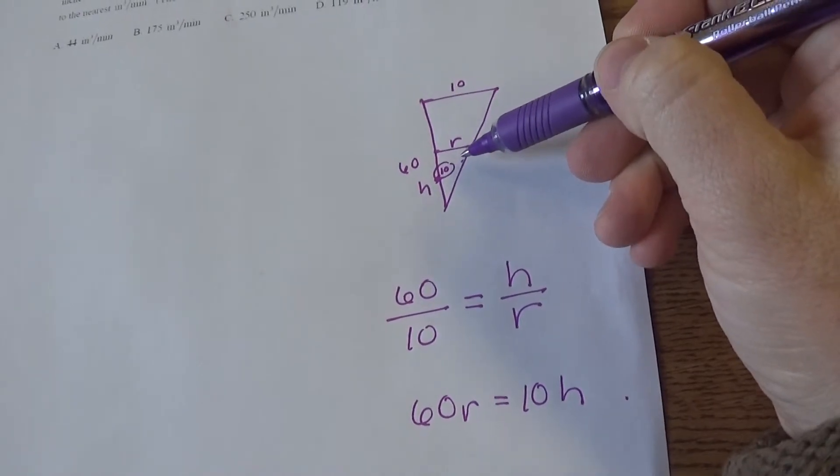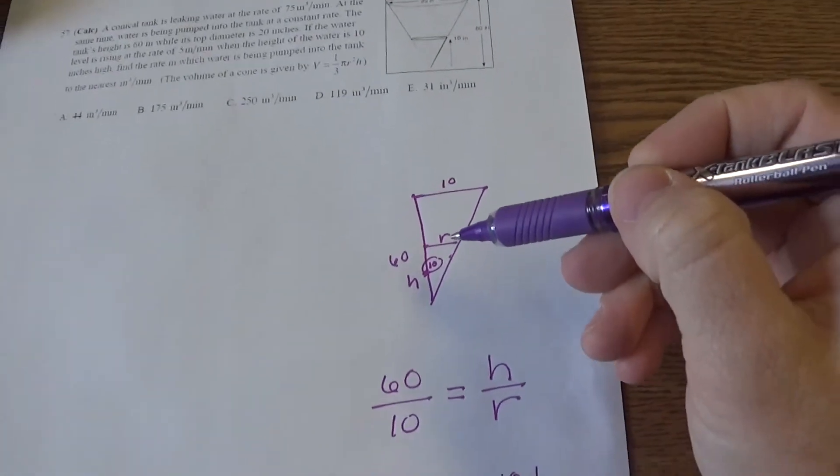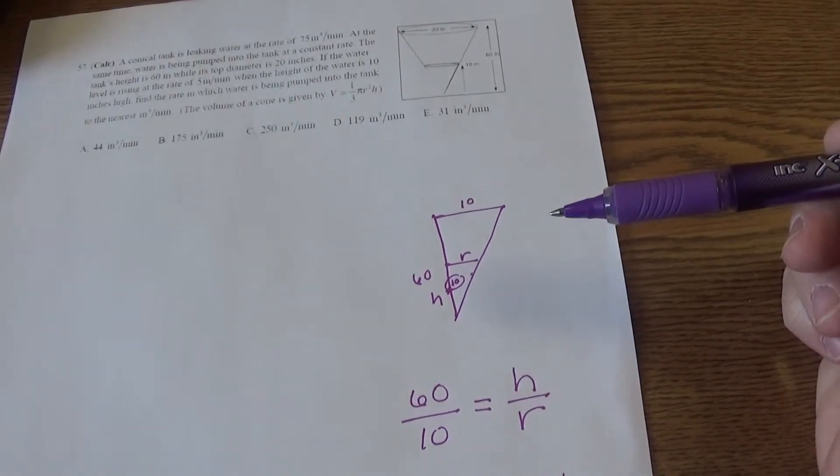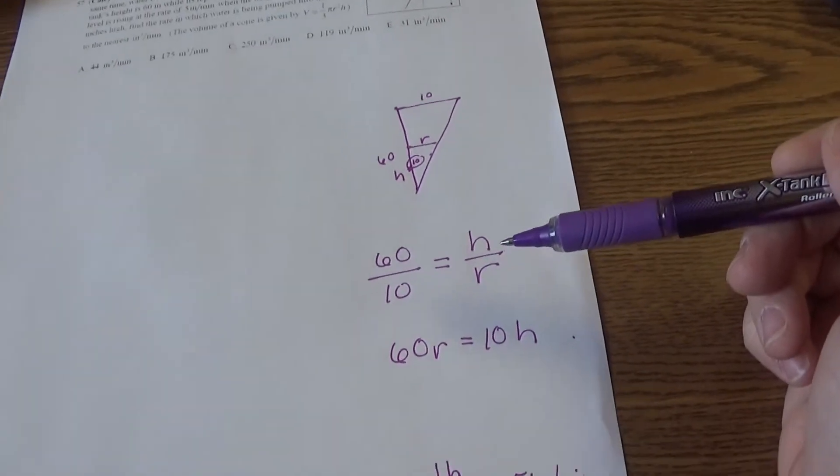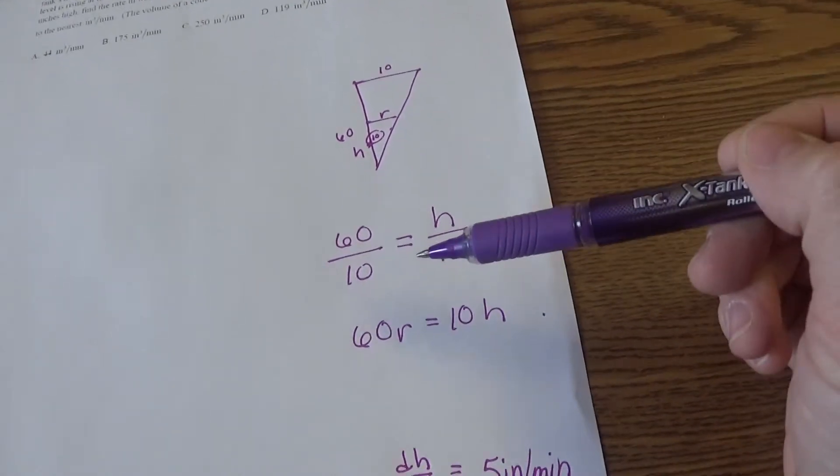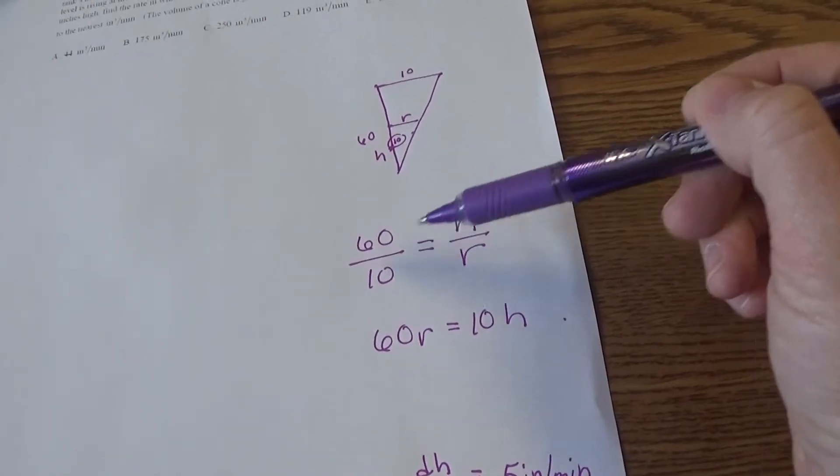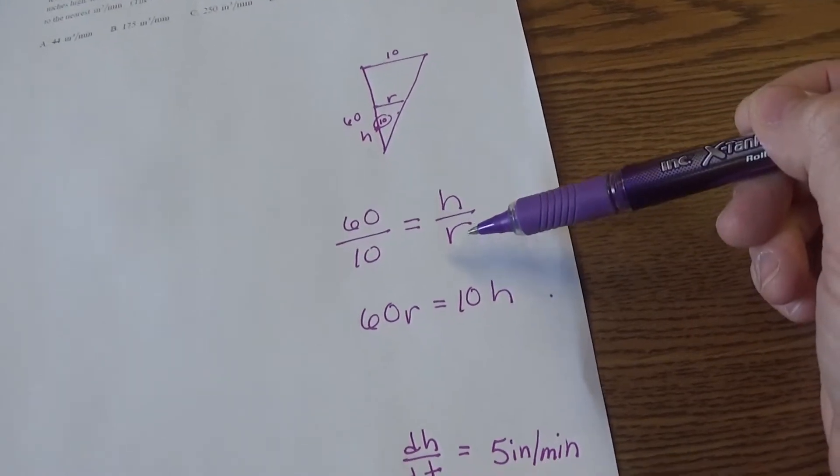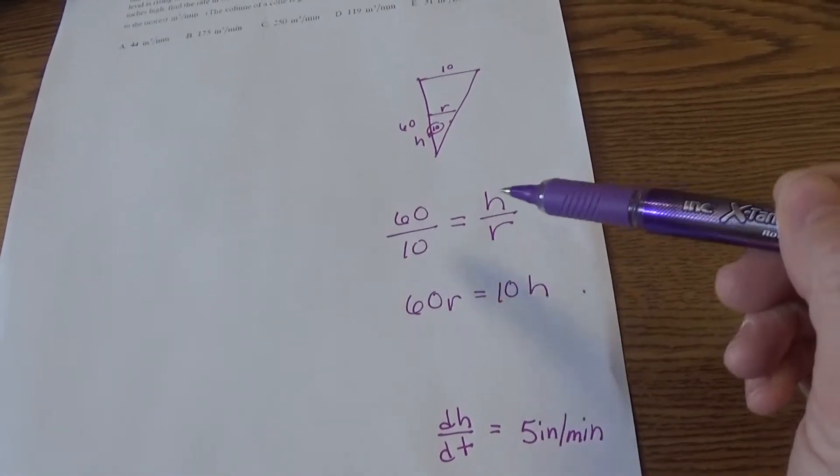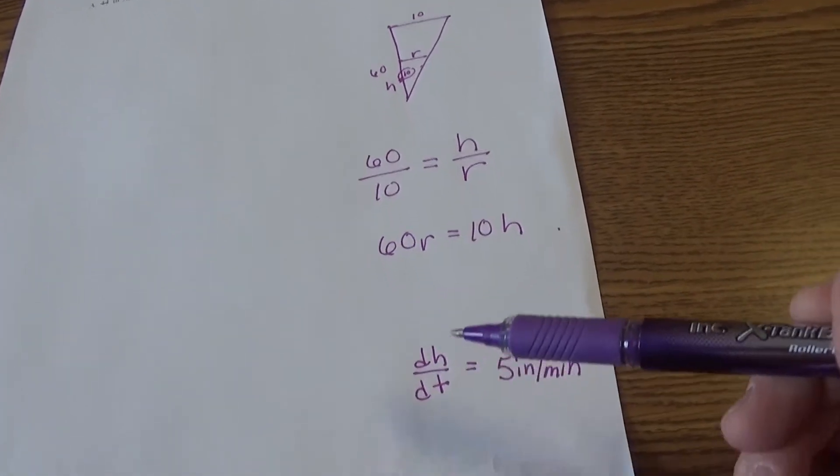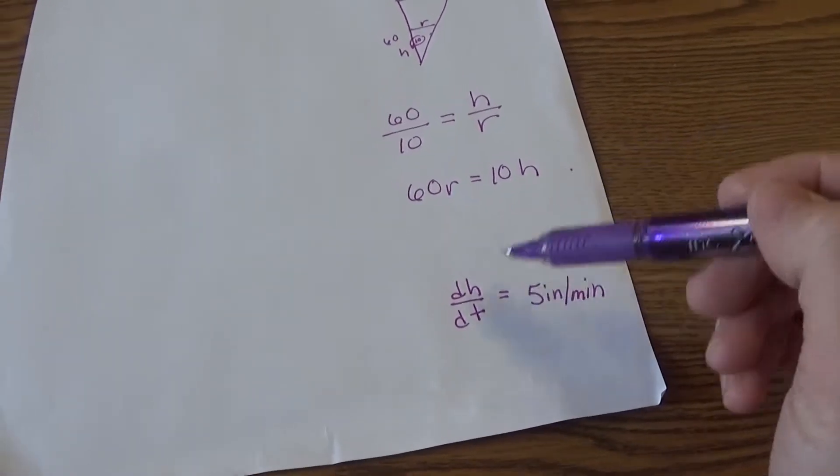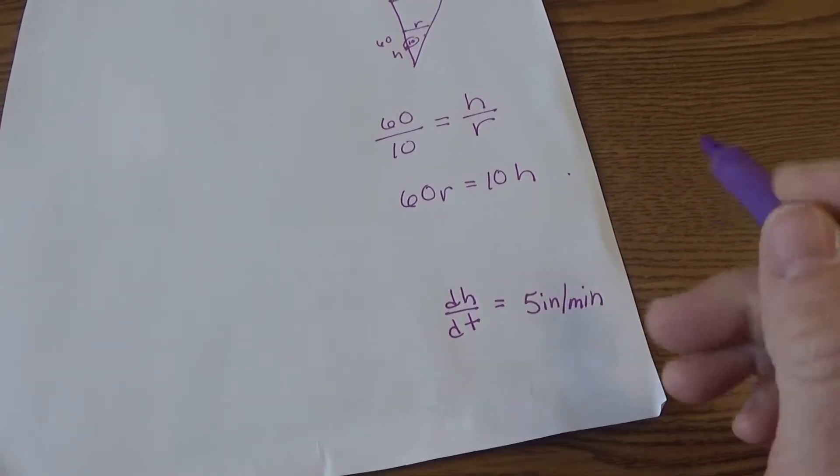I lightly wrote 10 because that is going to be the situation, but only temporarily. The key to this kind of problem is rewriting it as a ratio of sides. So 60 is our height that goes with 10 our radius, is to h going with r. I don't like that fraction look, so I just cross multiplied: 60 times r equals h times 10.